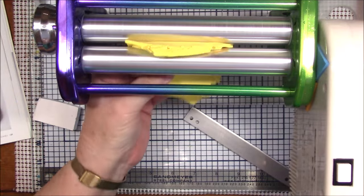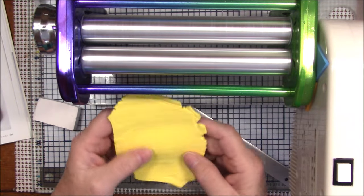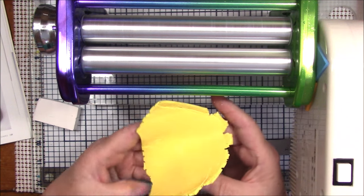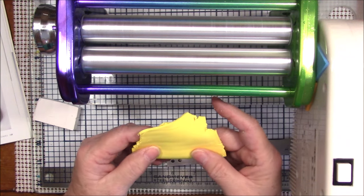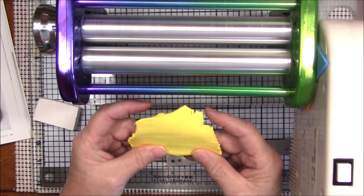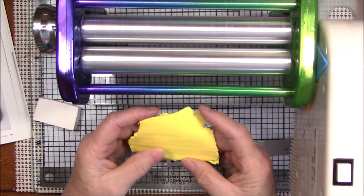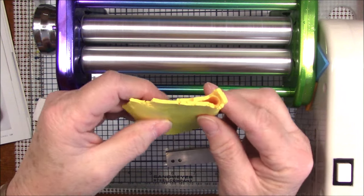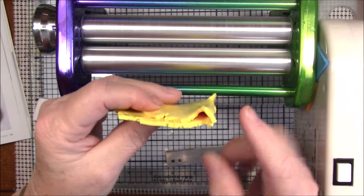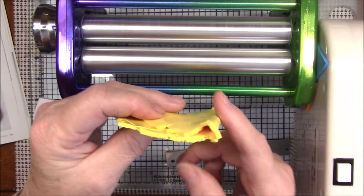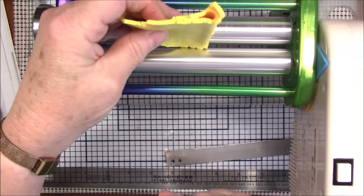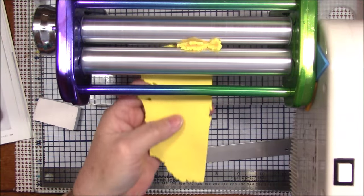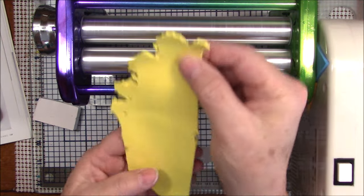So now I have one sheet of the sunshine clay. I'm going to fold it in half, and what I like to do is when I fold it, I take it and turn it one quarter of a turn so that the fold is on the right-hand side and I run it through this way.